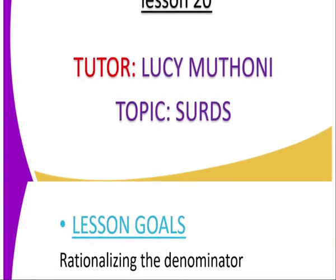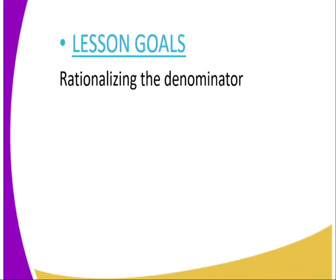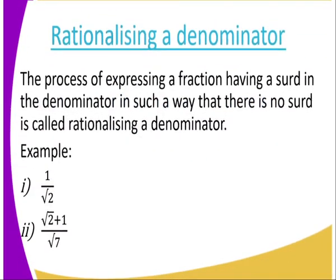Let us look at our lesson goals today. We are going to rationalize the denominators. We start by defining the process. The process of expressing a fraction having a surd in the denominator in such a way that there is no surd is called rationalizing the denominator. We are trying to ensure that the denominator does not have a surd — the denominator is a natural number.